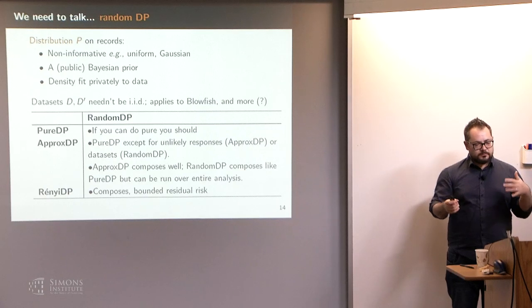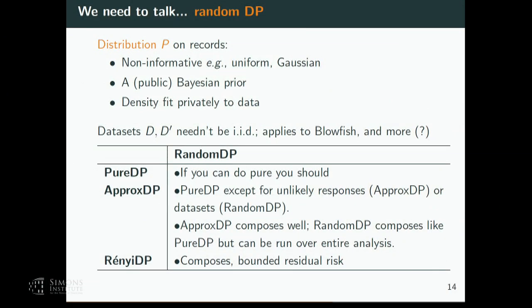If you can do pure DP, of course you should — no one should tell you otherwise. But there are situations where you might not be able to or might not want to. Approximate DP is pure DP except for unlikely responses. Random DP: pure DP holding except for unlikely databases. I can imagine in some cases people might be willing to do that — it really depends on your distribution and gamma. I'd rather someone use random DP than no DP at all — that's another way to look at it, though perhaps a bit defeatist. People don't use DP when they should.